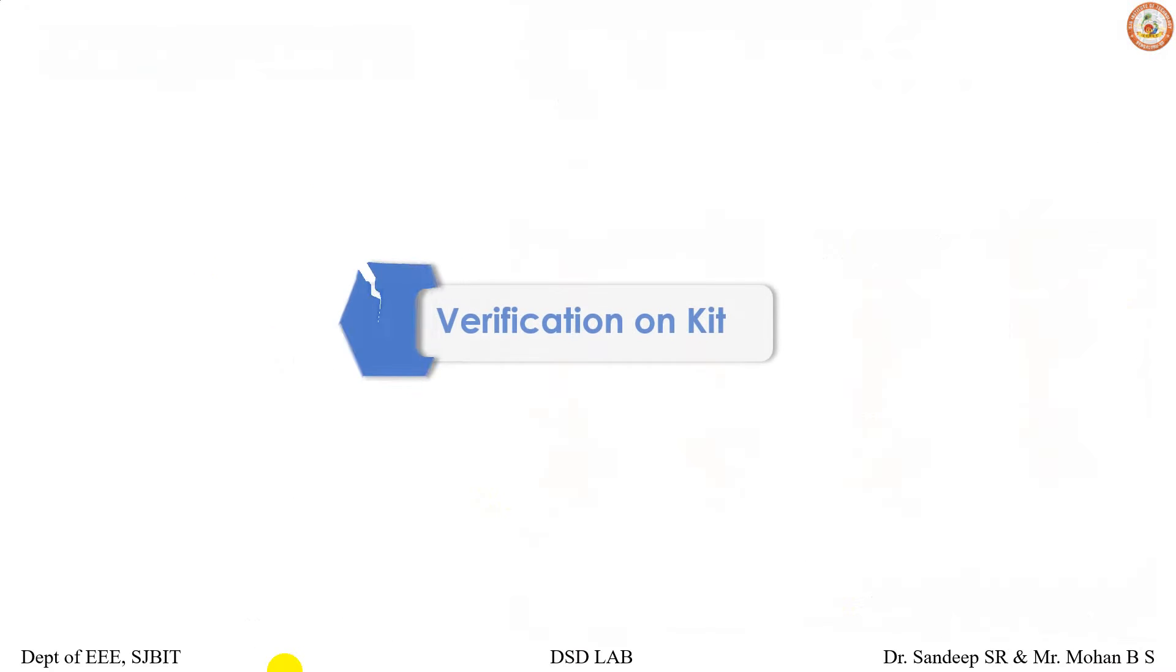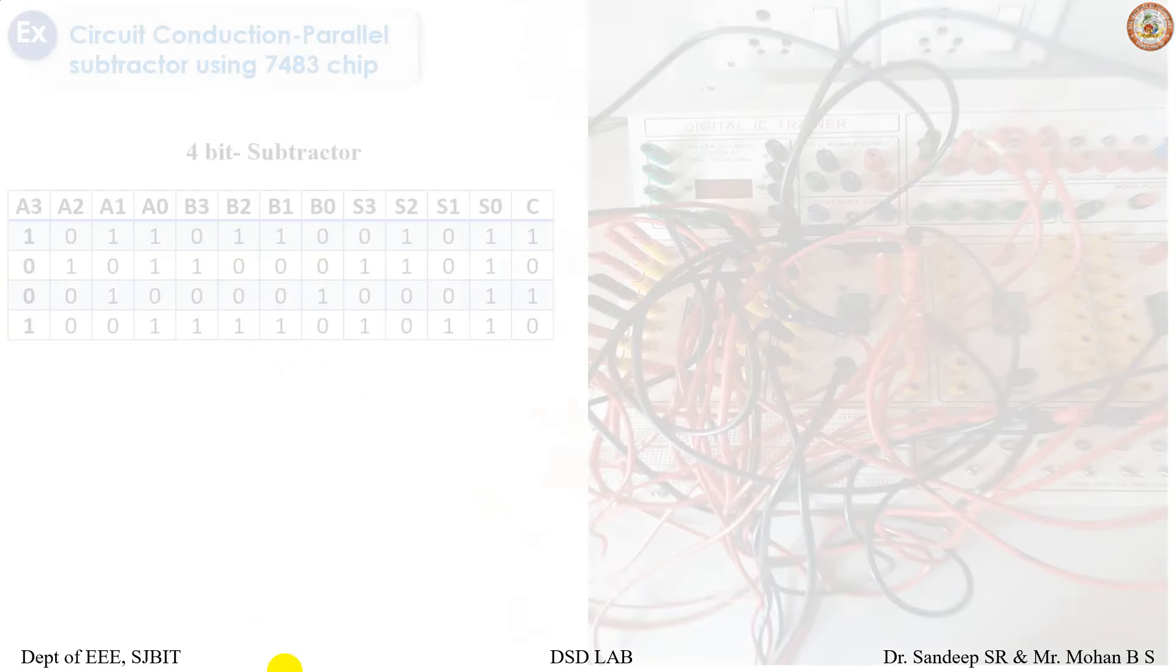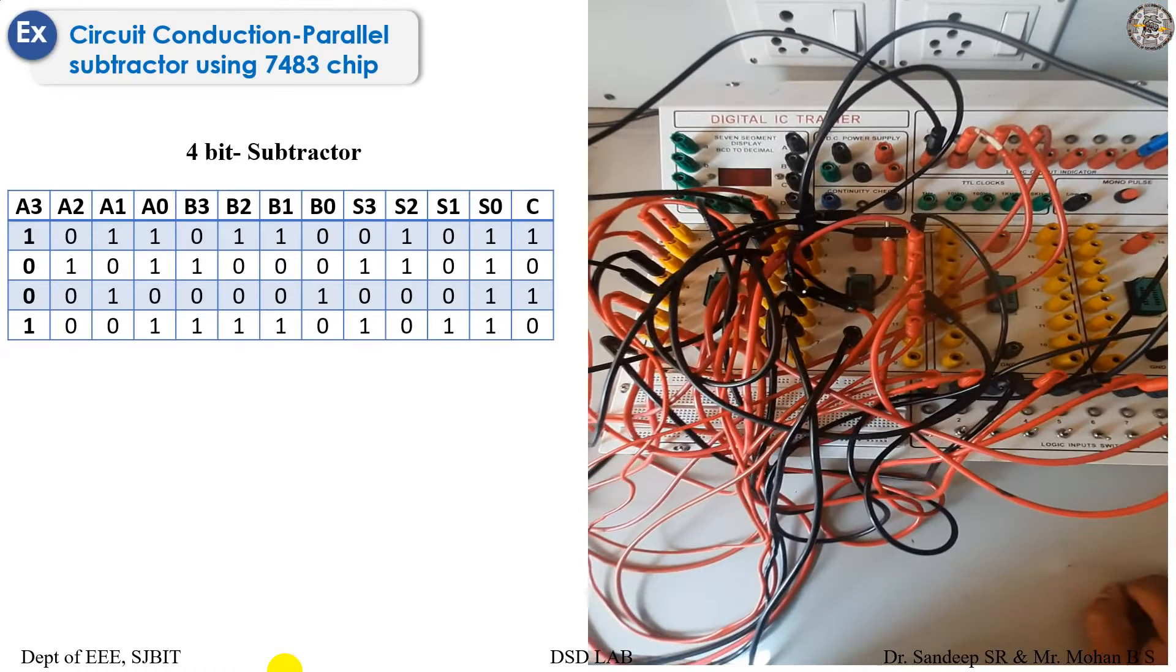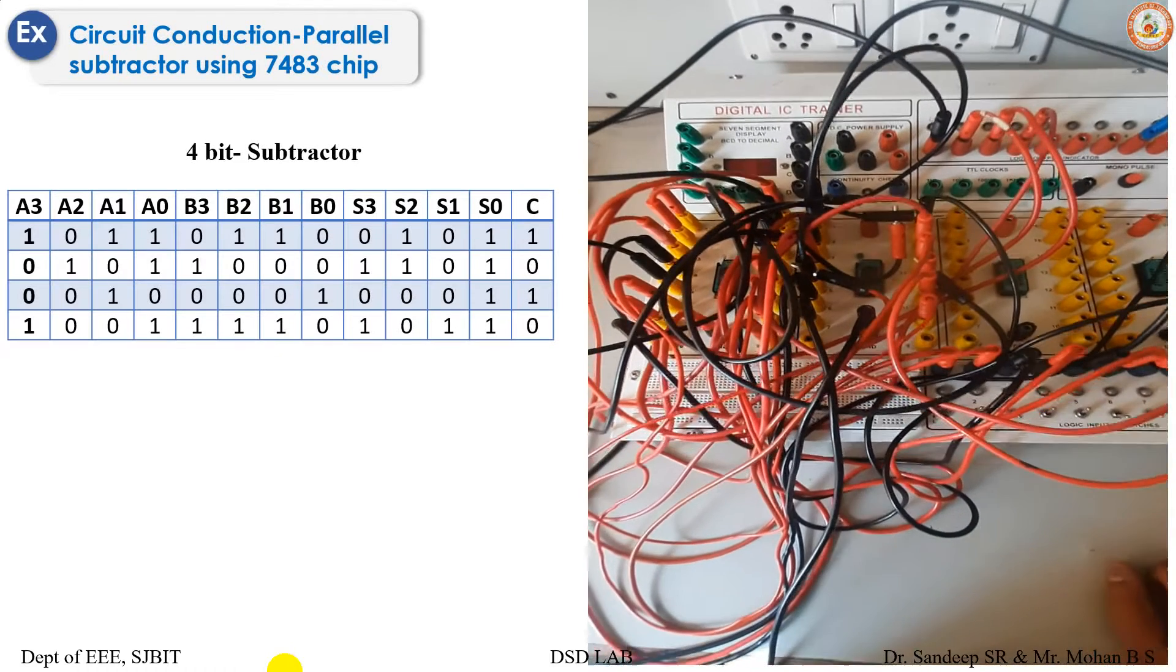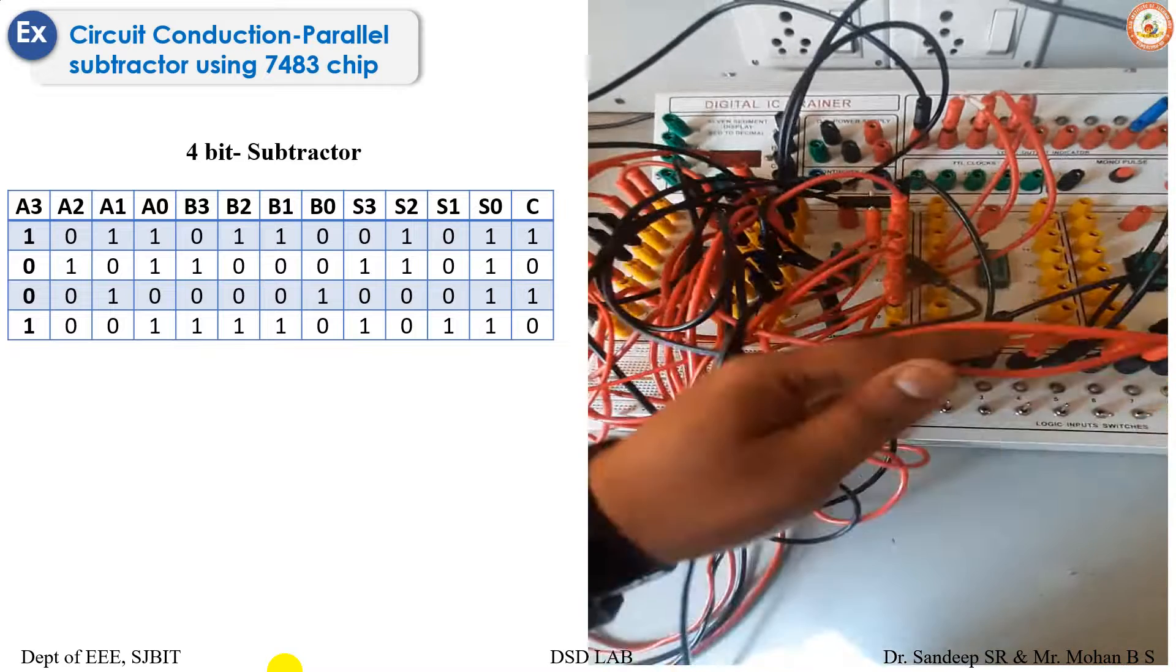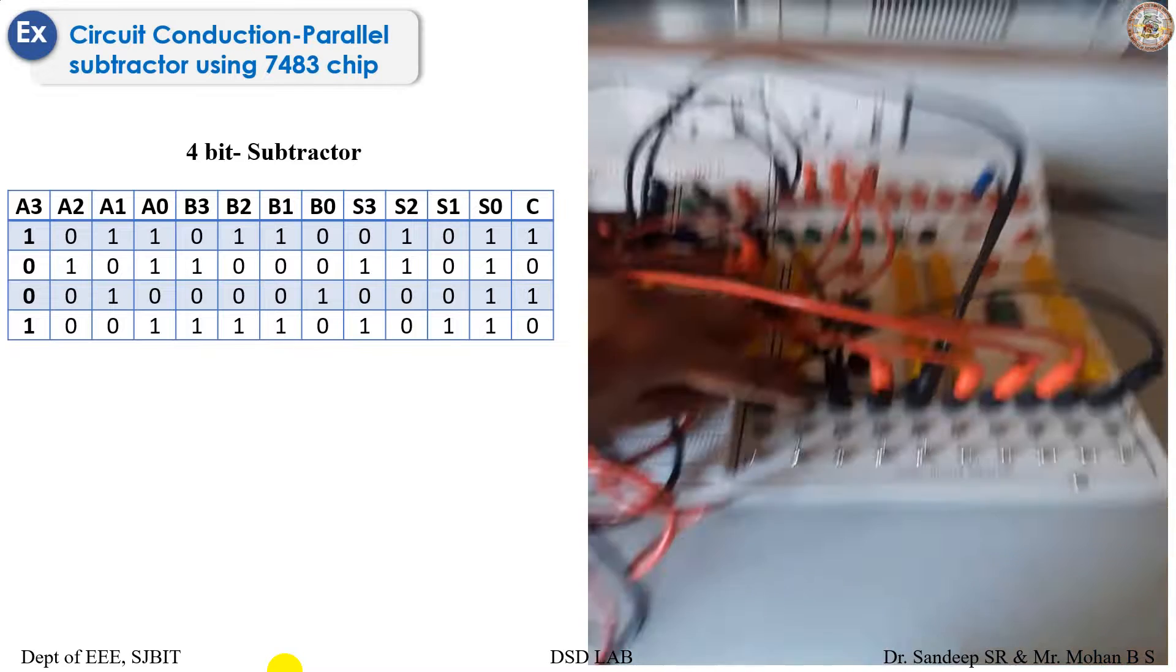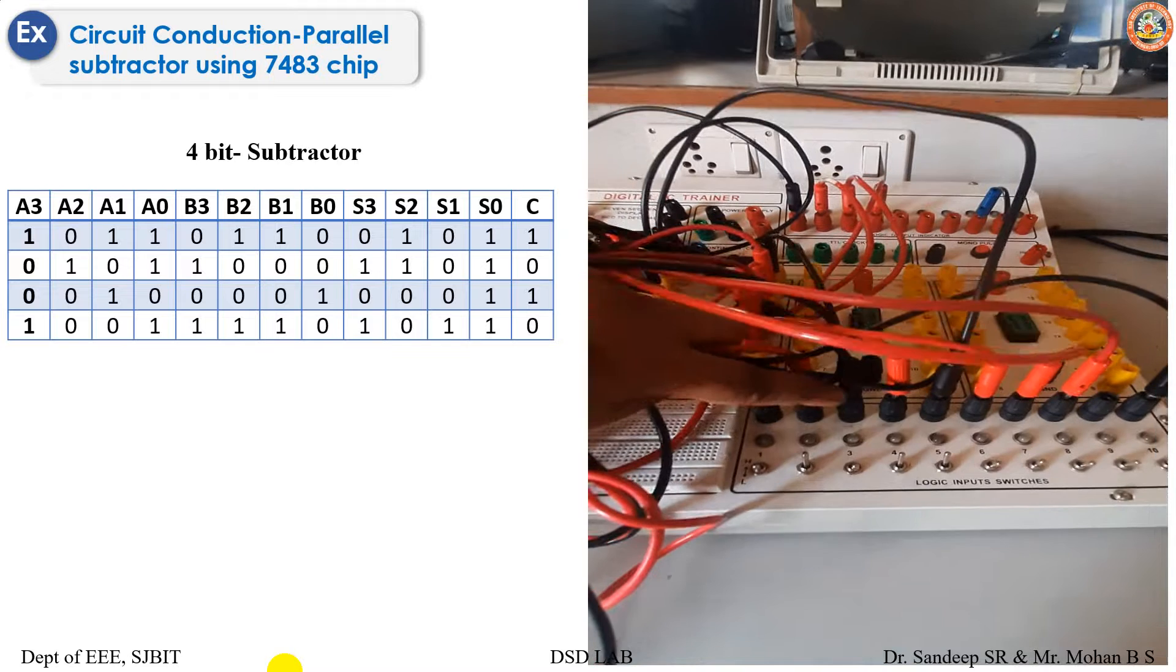Let's verify them on the kit. This is the circuit connection done for the subtractor. I have already seen how we do the circuit connections. These are the input ports: A3, A2, A1, A0.